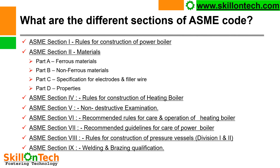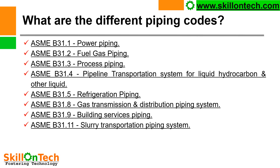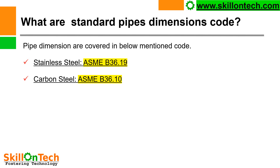Mechanical engineers must have good knowledge about ASME codes and their applications in their jobs. What are the different piping codes? ASME B31.1 is power piping, ASME B31.2 fuel gas piping, ASME B31.3 is process piping, ASME B31.4 is pipeline transportation system for liquid hydrocarbons and other liquids, ASME B31.5 is refrigeration piping code, ASME B31.8 gas transmission and distribution piping system, ASME B31.9 building service piping, ASME B31.11 slurry transportation piping system.